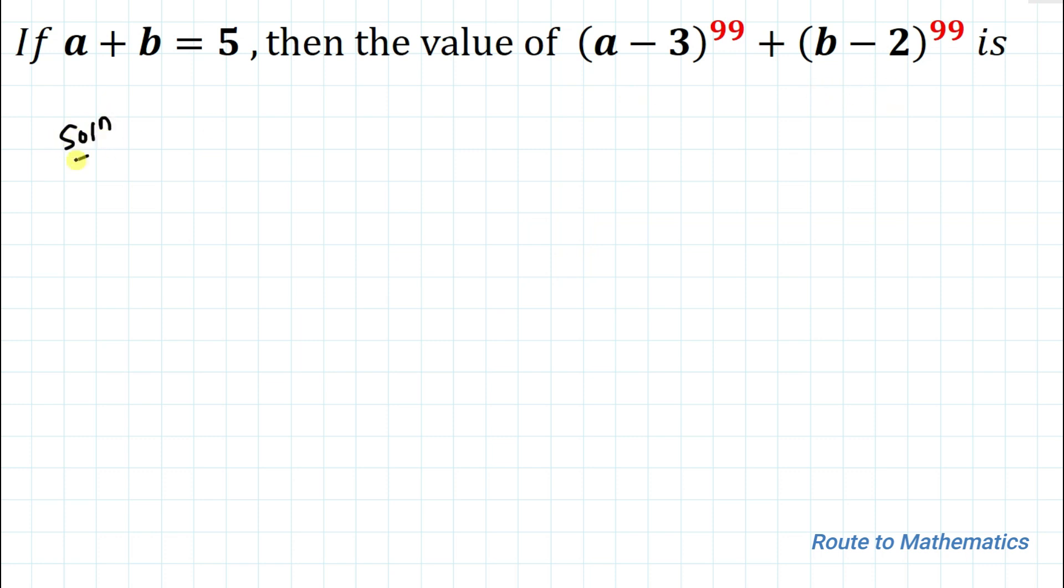So without any delay let's start this solution. Our given equation is a plus b equals 5. In the next step let's just take this 5 to the left hand side. So we have a plus b minus 5 equals 0.